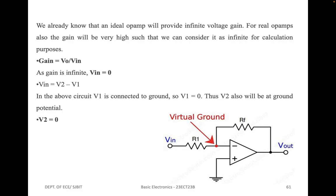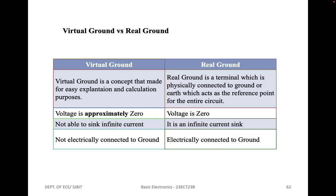An ideal op-amp will provide infinite voltage gain. For real op-amps, the gain is very high such that we can consider it as infinite for calculation purposes. Gain is the ratio of output voltage to input voltage. Since gain is infinite, input voltage becomes 0. So Vin equals V2 minus V1. In the circuit, V1 is connected to ground, so V1 equals 0. Therefore V2 will also be at ground potential and V2 becomes 0, which is why that point is referred to as virtual ground.